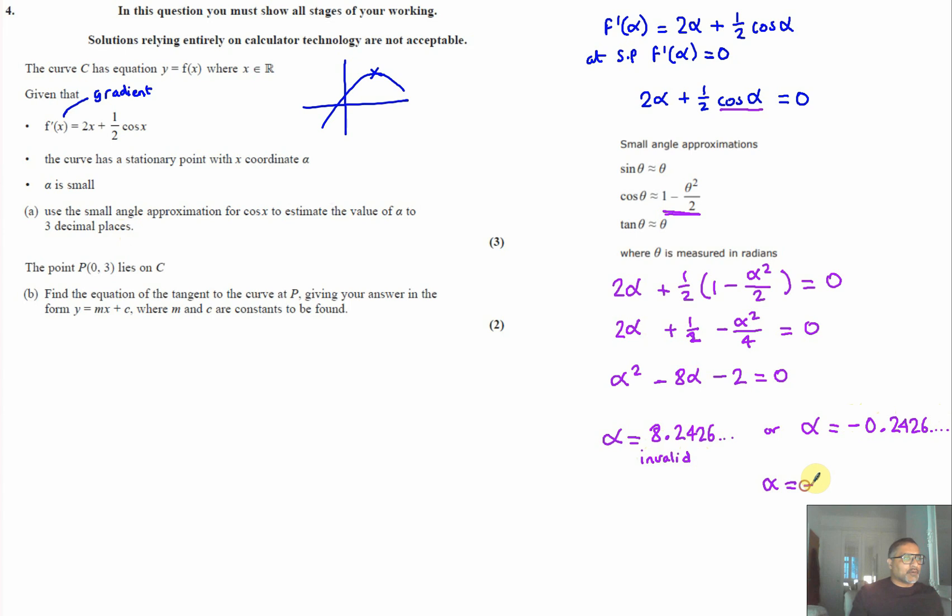Now for part b: the point (0, 3) lies on C, and we need to find the equation of the tangent of the curve at p, giving the answer in the form y equals mx plus c, where m and c are constants to be found. For this curve f of x at the point (0, 3), there is a tangent, and we need to know the equation of this line.